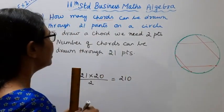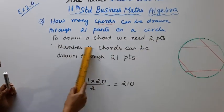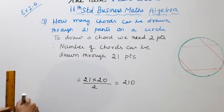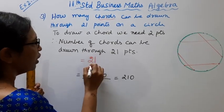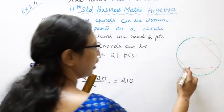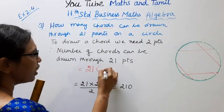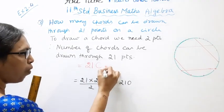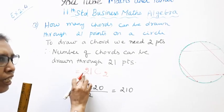To draw a chord we need two points. The number of chords that can be drawn through 21 points - we have 21 points, so we use the combination formula. It's 21C2, because we need two points to draw a chord.